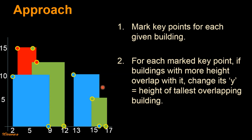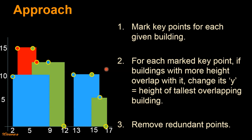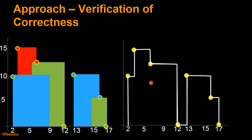After executing step 2 for all key points, the key points would be placed accordingly. The third step of this approach is to remove the redundant key points — points which are not necessary to describe a skyline, such as the key point at [5, 15] and [9, 12]. After removal of these redundant points, we'll be left with only the necessary points. By joining these key points, we'll be able to draw the complete picture of the skyline for this set of buildings.